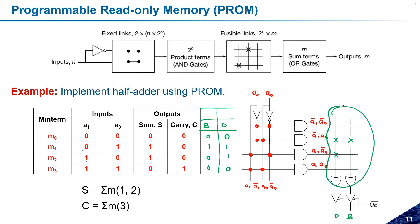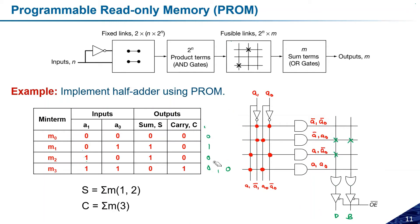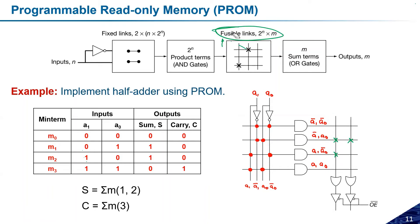So this is how PROM differs from ROM. Fusible means you can program it, erase it, and reprogram it — this program-erase-program cycle is possible in PROM but not in ROM, where once programmed it cannot be changed.